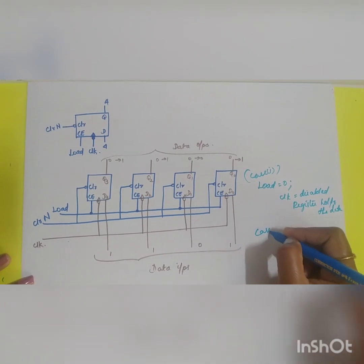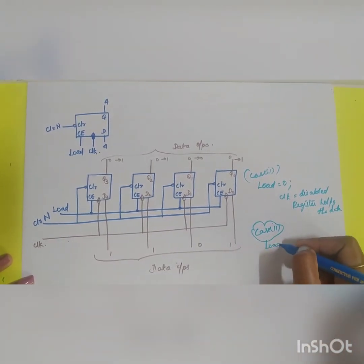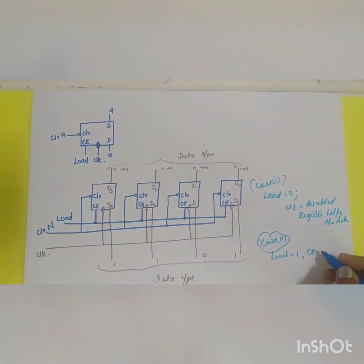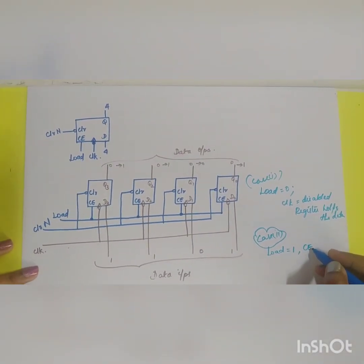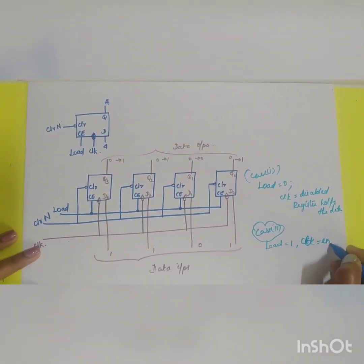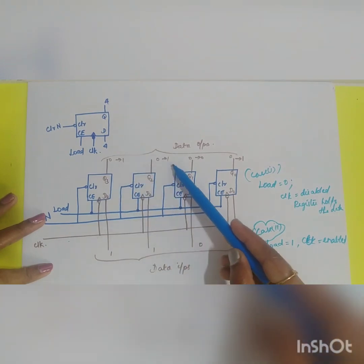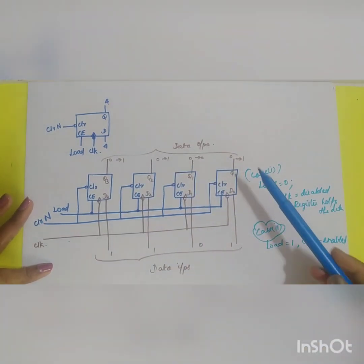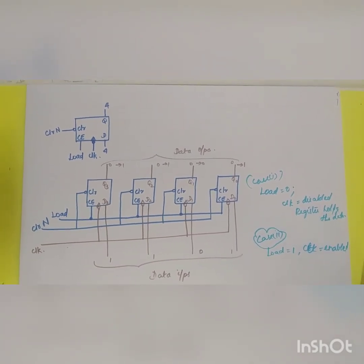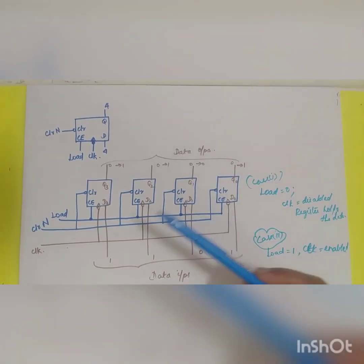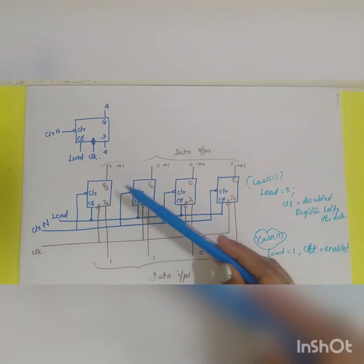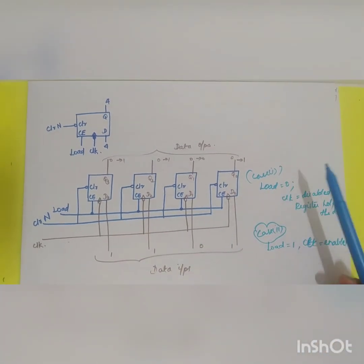Case 2: When the load is equal to 1. When load is equal to 1 the clock will be enabled and the data will be entered. In the output you will be getting the shifted data. That is 1, 1, 0, 1. So this will be your working principle of the D flip-flop using load, clear and clock signals.